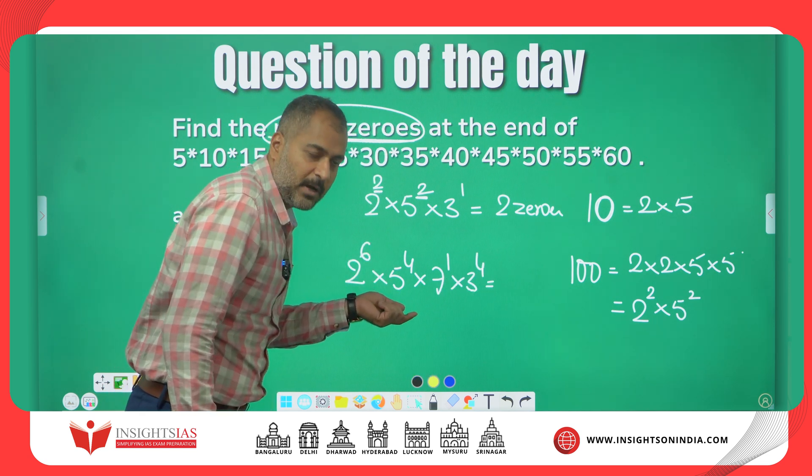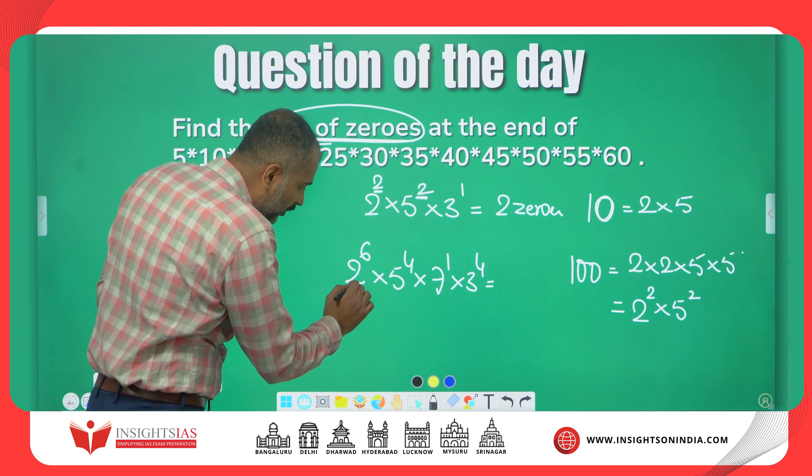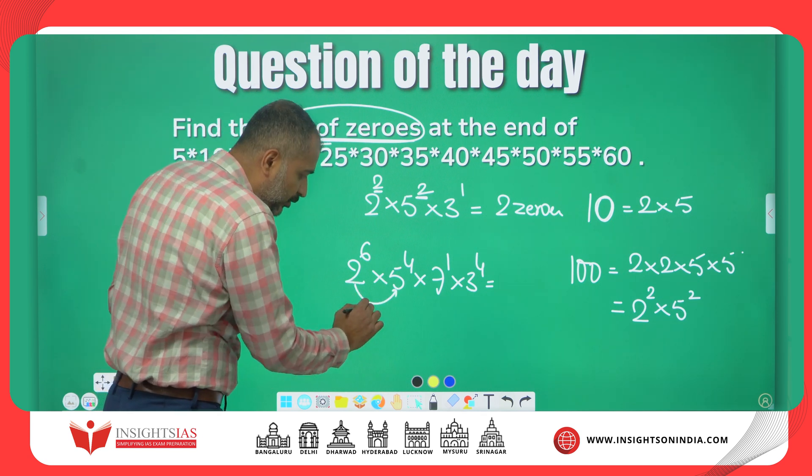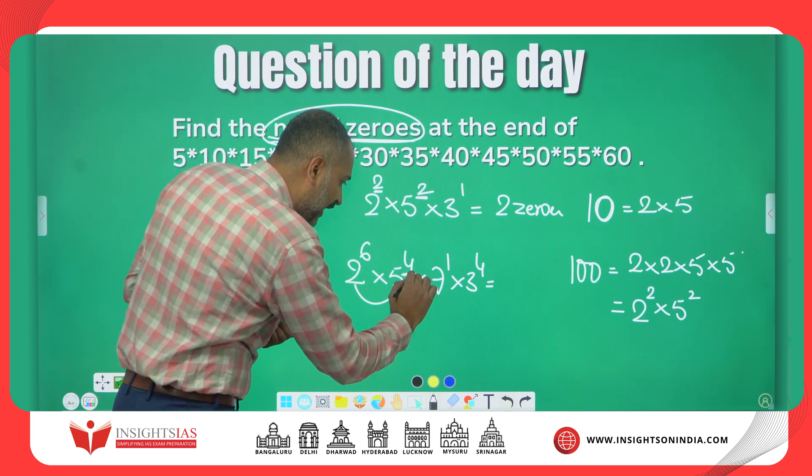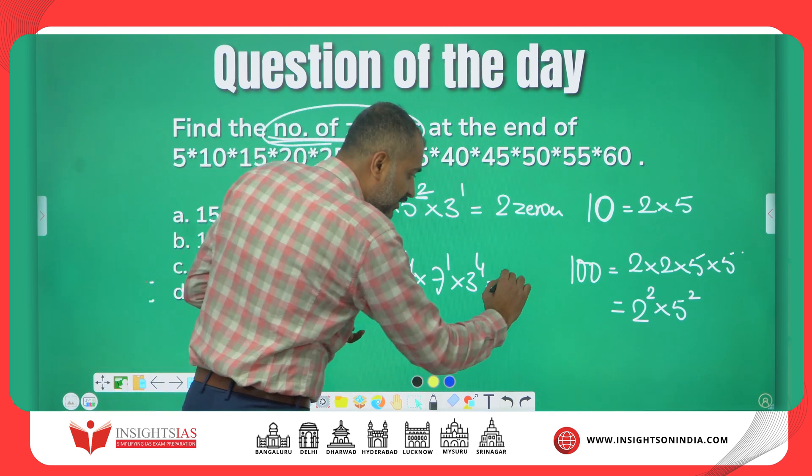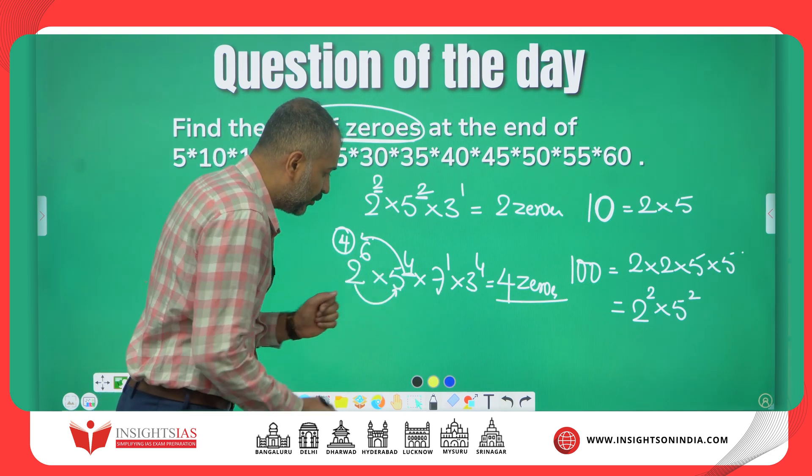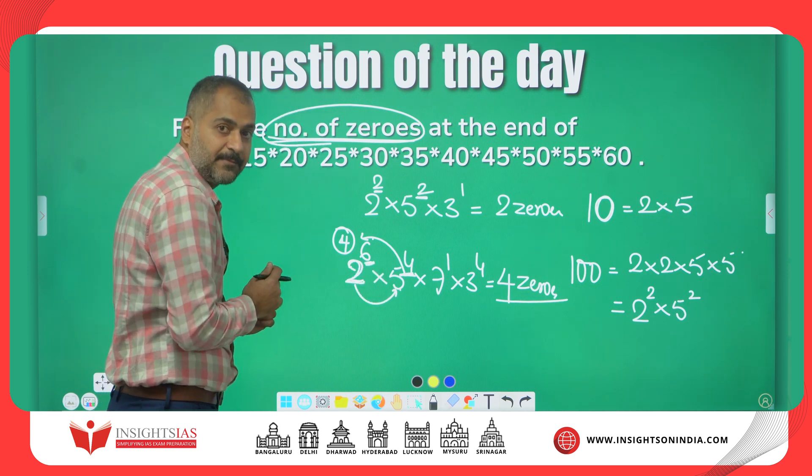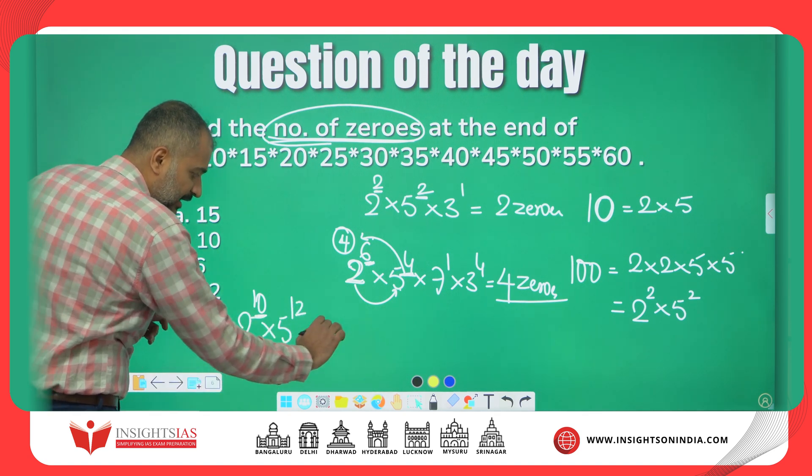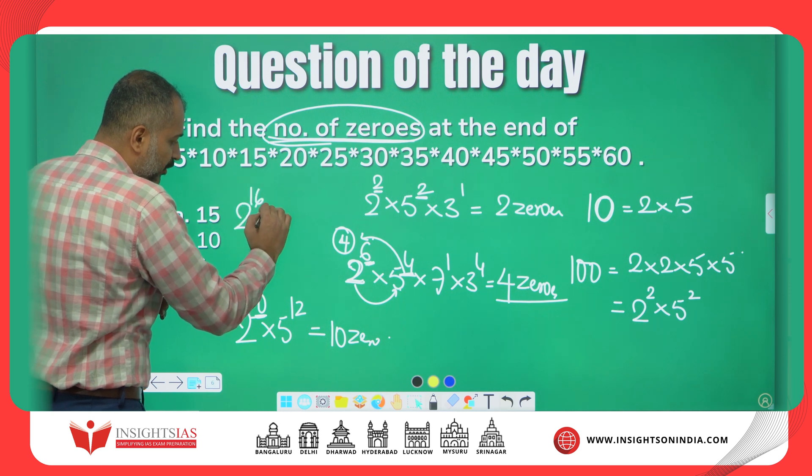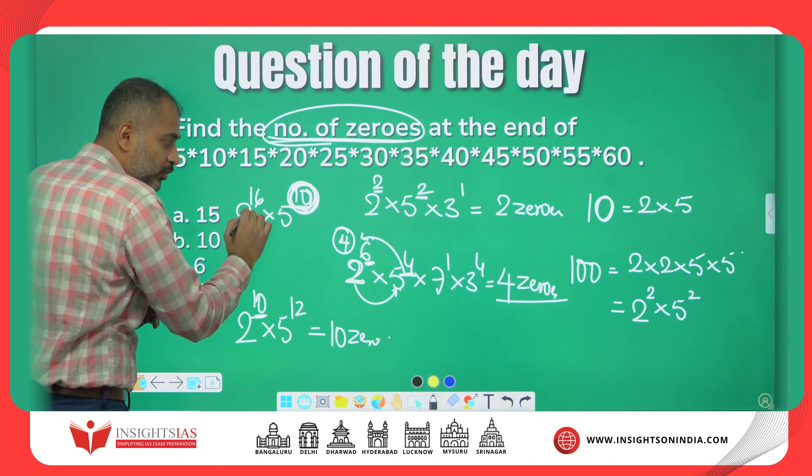Another example: 2⁶×5⁴×7¹×3⁴. We need only 2s and 5s, irrespective of how many 7s, 3s, or any other numbers we have. Here, 4 fives multiply with 4 twos and get 4 zeros. Another 2 twos do not have a pair to make with 5, hence only 4 zeros here. Whichever the power is less for 2s and 5s, that many zeros. For example, 2¹⁰×5¹², how many zeros? This power is less, hence 10 zeros. 2¹⁶×5¹⁰ gives 10 zeros because this power is less.